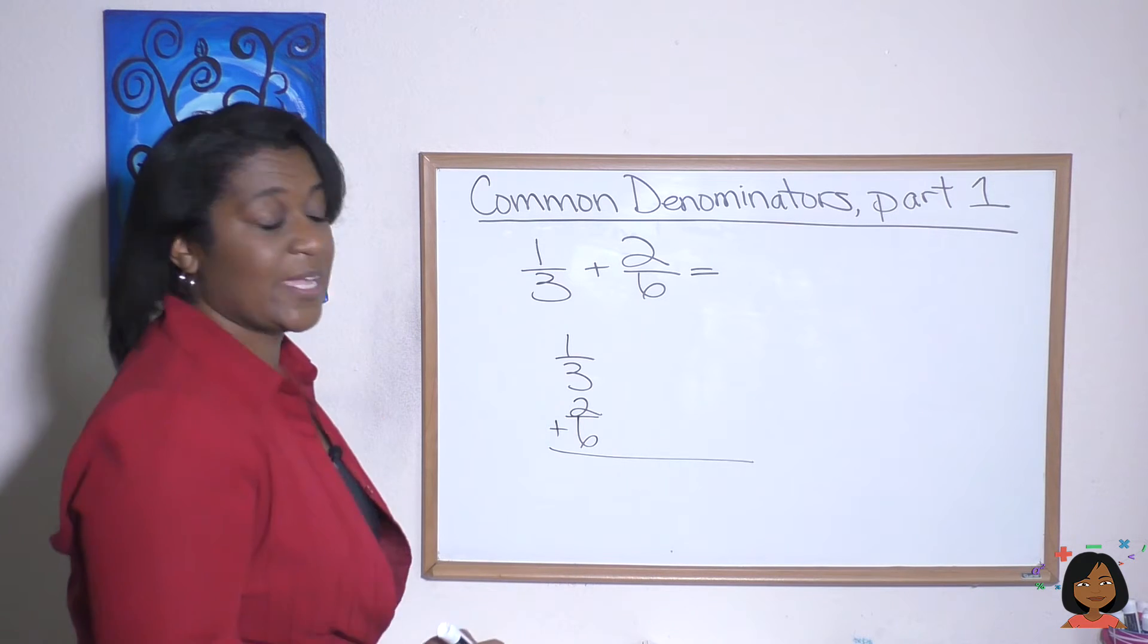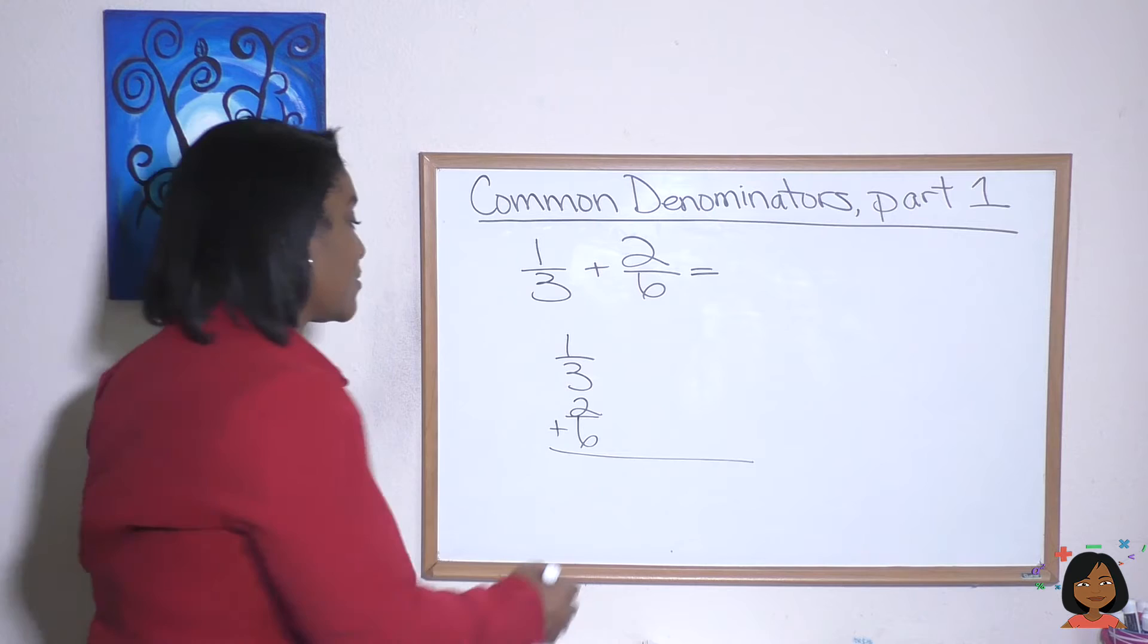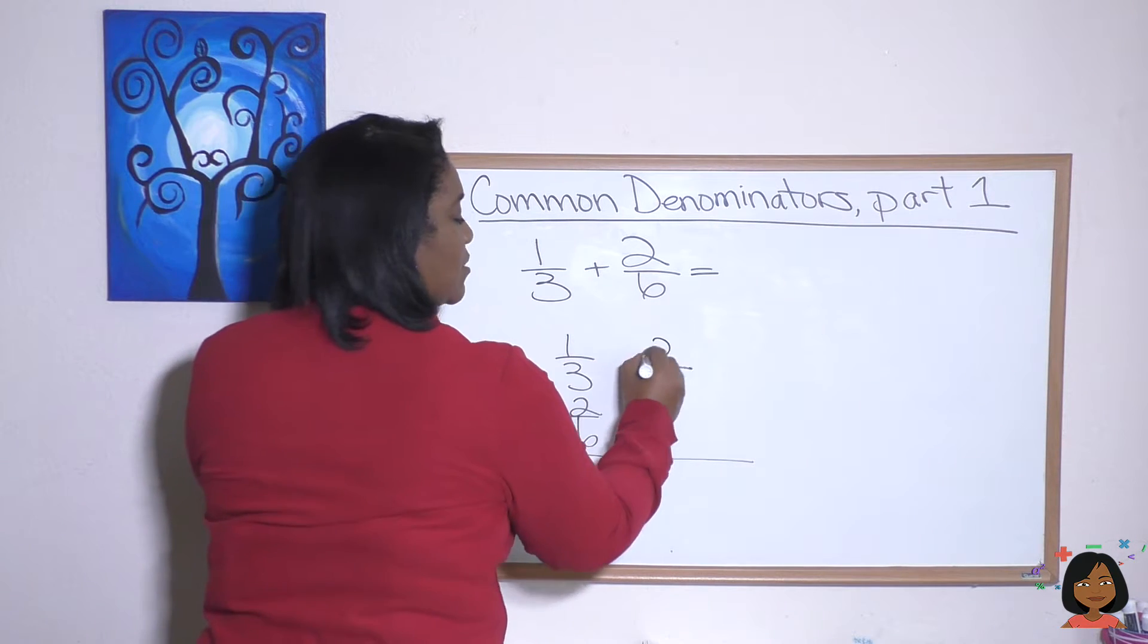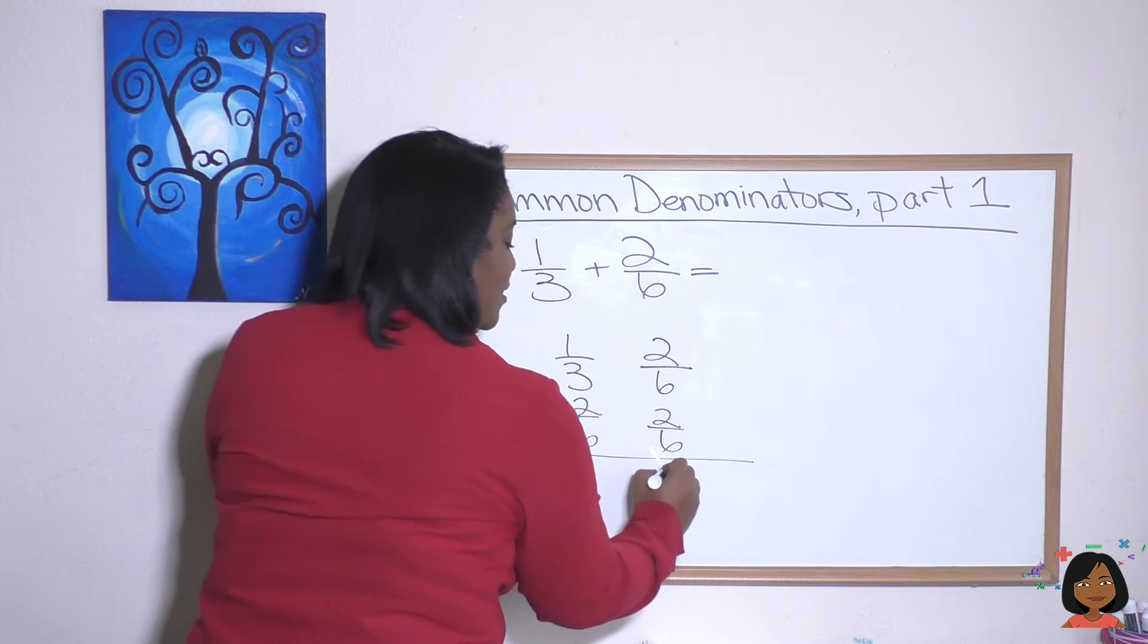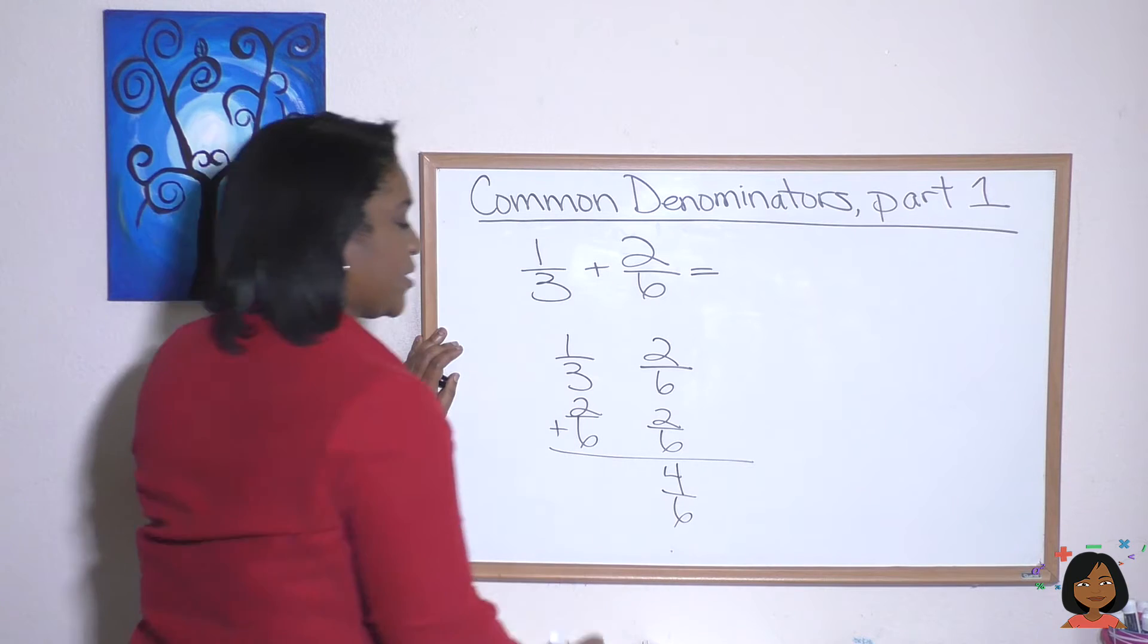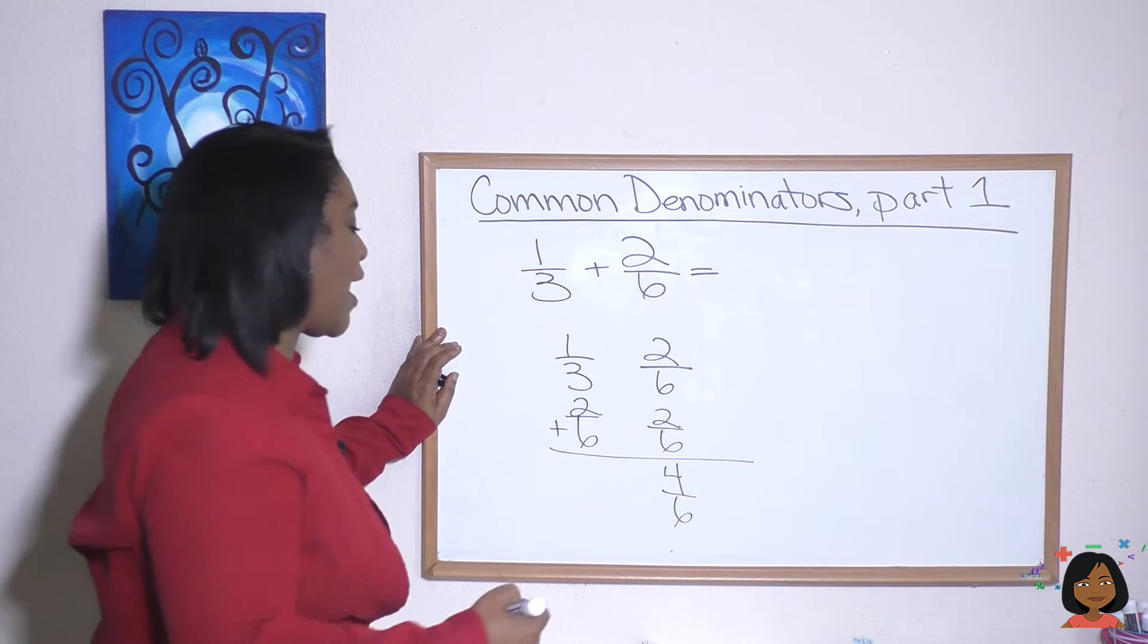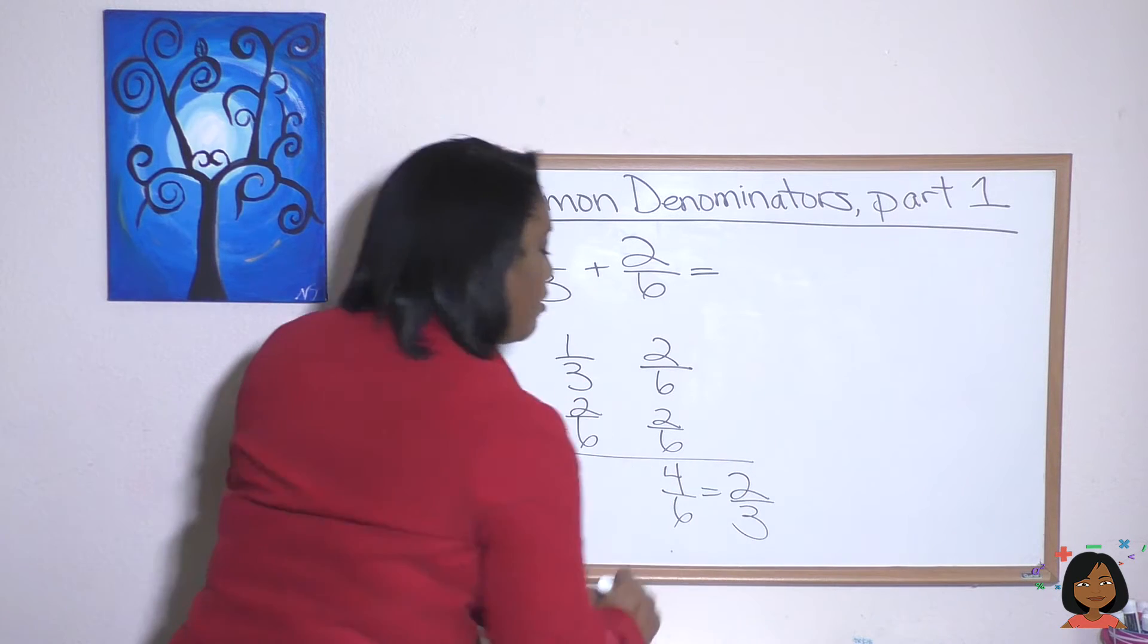It looks like the common denominator between three and six is going to be six. So let's rewrite the one-third. Three times two is six, so one times two is two. Let's add it to the already existing two-sixths. Our answer is four-sixths. But do we keep four-sixths as is? Nope. We need to simplify and reduce that down to two-thirds.